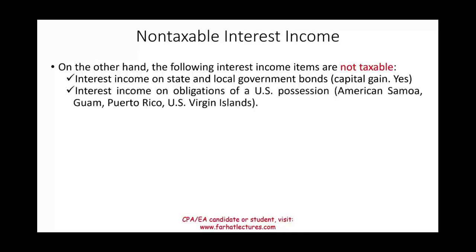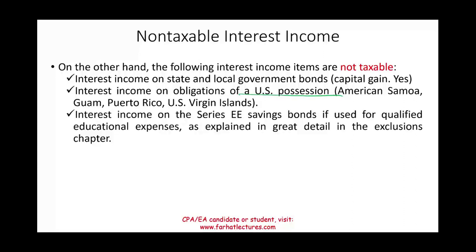The same concept applies to interest on obligations of US possessions like American Samoa, Guam, Puerto Rico, and the US Virgin Islands. Interest on Series EE savings bonds used for qualified educational expenses is also excluded. On the CPA exam, the focus is on interest on municipal bonds — state and local government bonds. Note: if you sell a municipal bond and realize a capital gain, that capital gain is taxable. Only the interest component is tax-free.